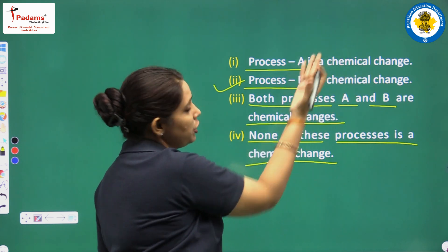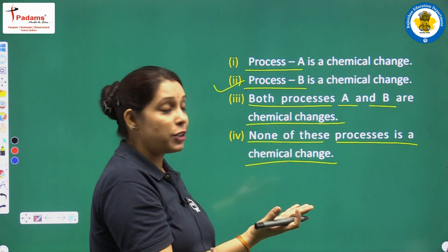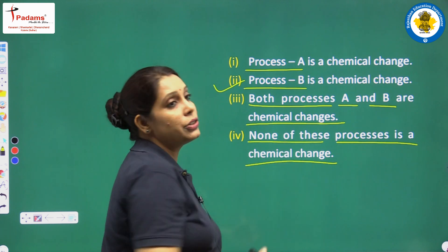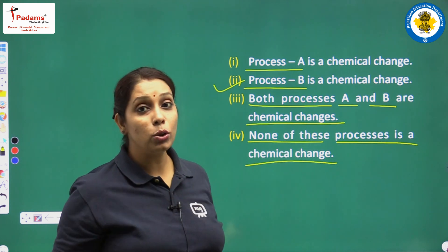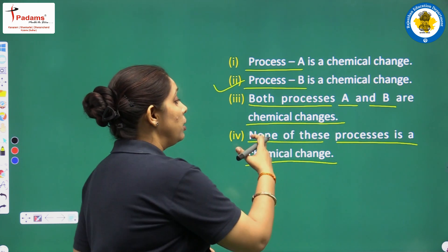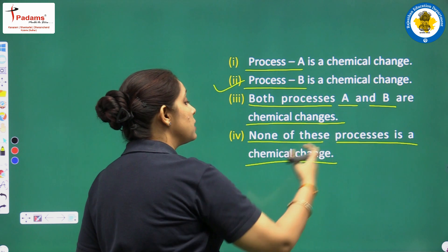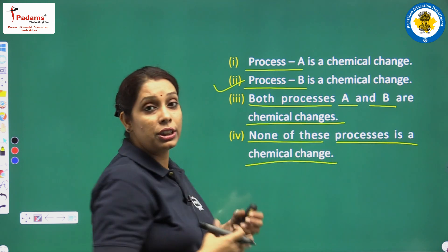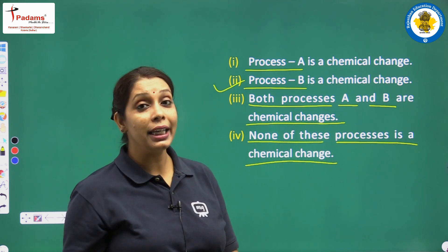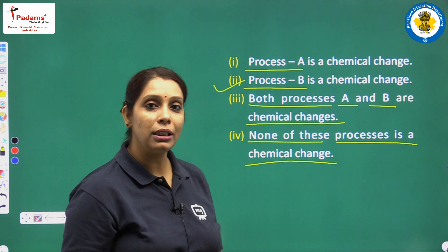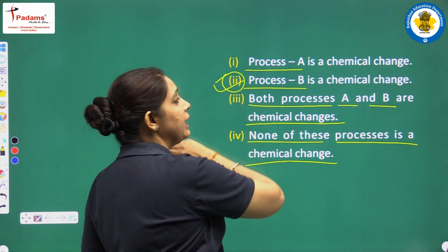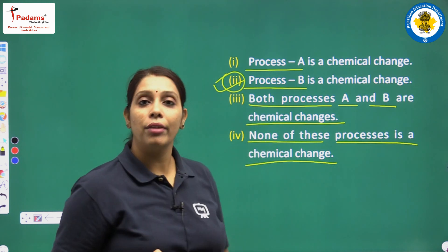Process A is a chemical change — that statement is wrong. Both processes A and B are chemical changes — that is also wrong, because A is a physical change. None of these processes is a chemical change — no, because process B is indeed a chemical change. So option 2 — process B is a chemical change — is the correct answer.